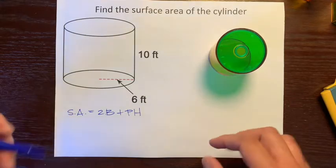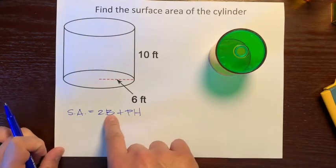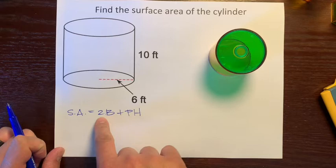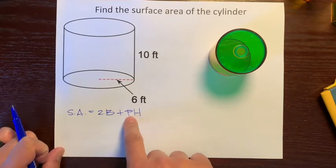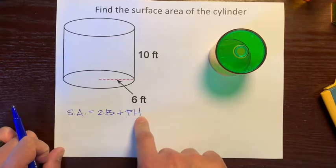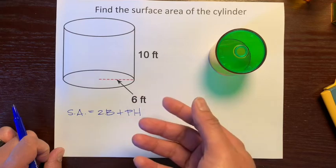Let's review really quick. The B stands for base area, the 2 is for the two bases, the P is for base perimeter, and the H is the distance between the two bases.